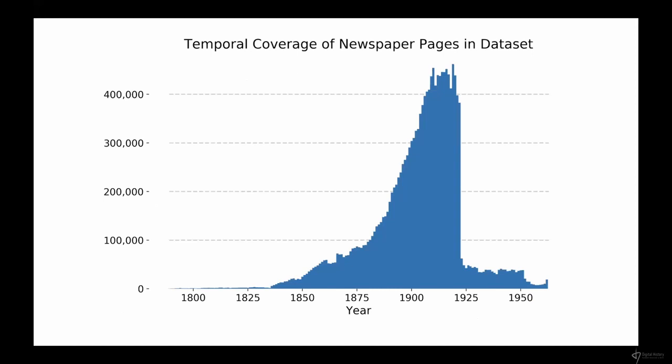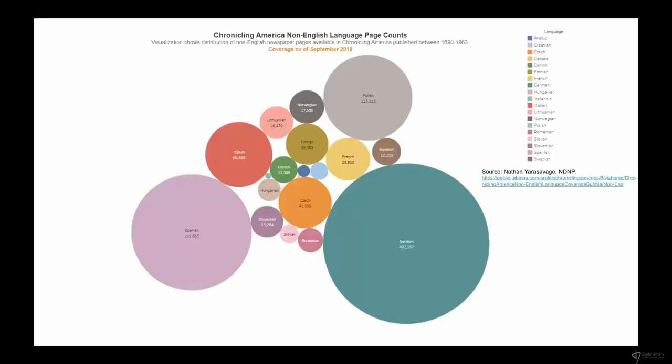In terms of temporal coverage, the collection spanned 1789 to 1963, with a real critical mass from 1875 to 1923. That precipitous drop is largely due to U.S. copyright law and what papers were automatically in the public domain. But even for pre-1875 papers we see over a million of them, so it's really possible to study any portion of American history using this collection.